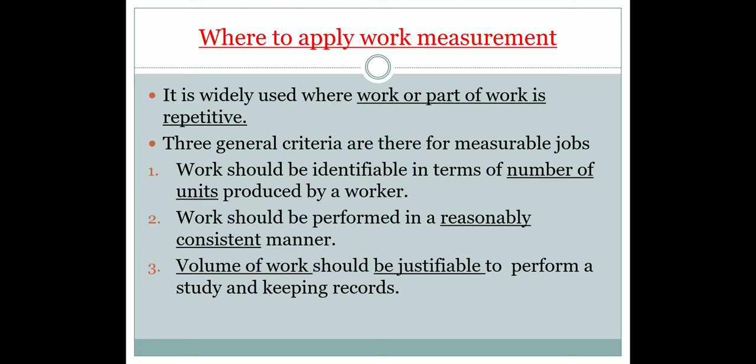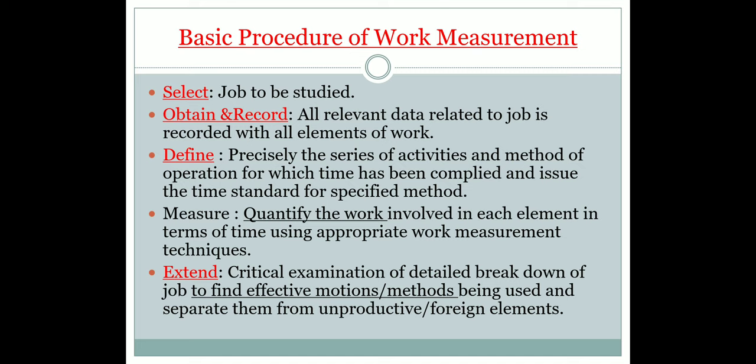Three general criteria for measurability of a job: first, work should be identifiable in terms of number of units produced by the worker; second, the work should be performed in a reasonably consistent manner; and third, the volume of work should be justifiable to perform a study and keep that record.